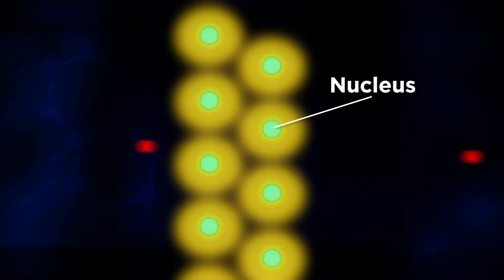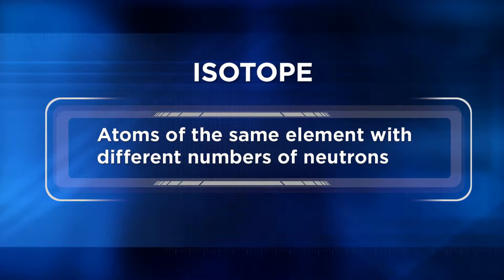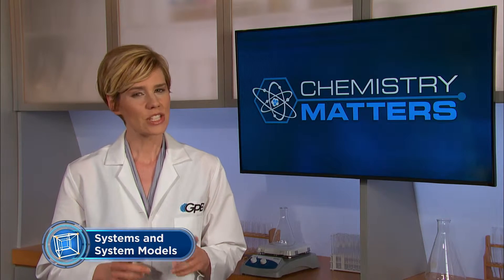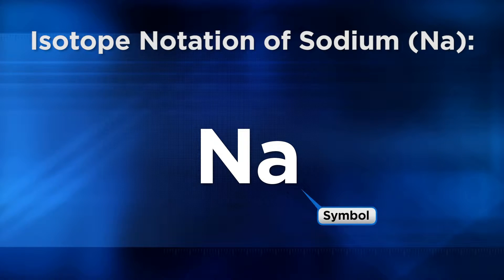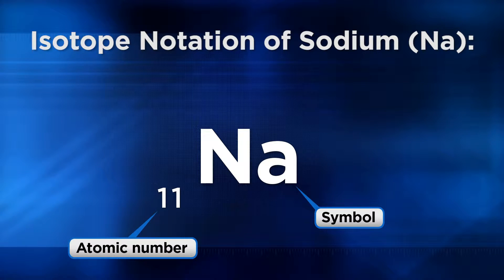As you know from the last video on the Unit 11 playlist, an isotope is defined as atoms of the same element with different numbers of neutrons. Isotope notation is a common method for communicating information about a single atom or radioactive particle, so this is a good time to learn how to write isotope notation to represent radioactive particles. Let's use a familiar atom — sodium — to show you what I mean. First, write the chemical symbol for sodium, Na. On the lower left, write the number of protons, known as the atomic number, as a subscript before the symbol.